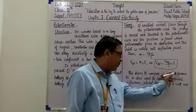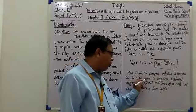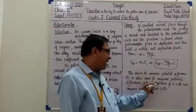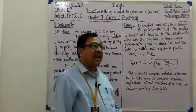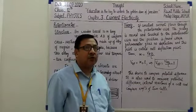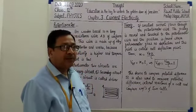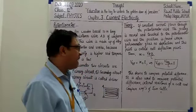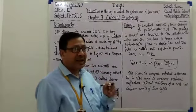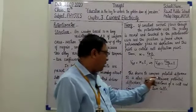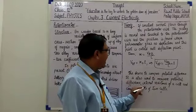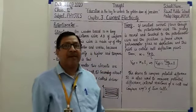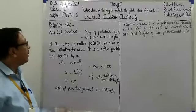This device is used to compare potential difference, measure potential difference, and measure the internal resistance of a cell. For example, a Leclanché cell in ideal condition has an EMF of 1.5 volt, but with respect to time, its EMF and internal resistance are variable. With the help of a potentiometer, we can find out the internal resistance of a Leclanché cell at a particular position, and also compare the EMF of two cells — like Leclanché and Daniel cells.